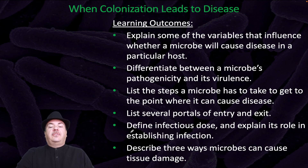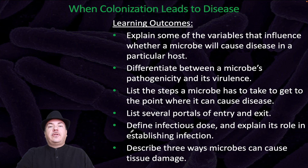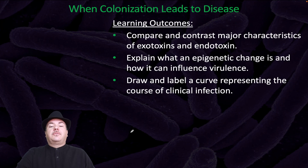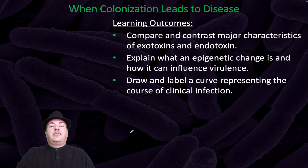Differentiate between a microbe's pathogenicity and its virulence. List the steps a microbe has to take to get to the point where it can cause disease. List several portals of entry and exit. Define infectious dose and explain its role in establishing infection. Describe three ways microbes can cause tissue damage. Compare and contrast major characteristics of exotoxins and endotoxins. Explain what epigenetic change is and how it can influence virulence. Draw and label a curve representing the course of clinical infection.